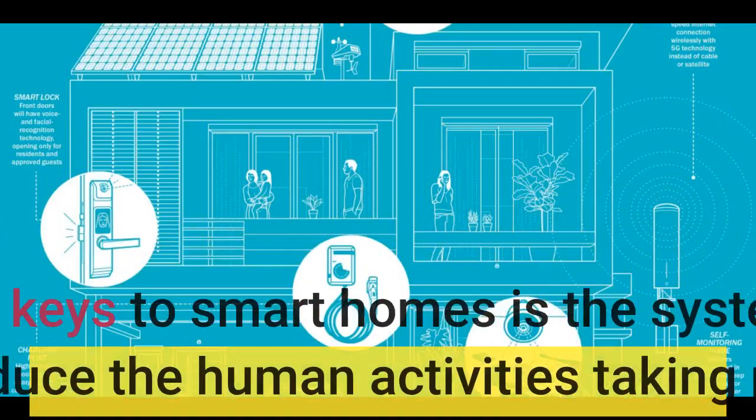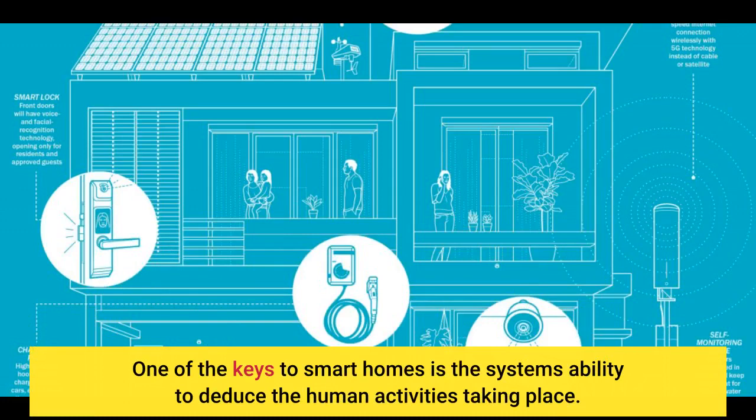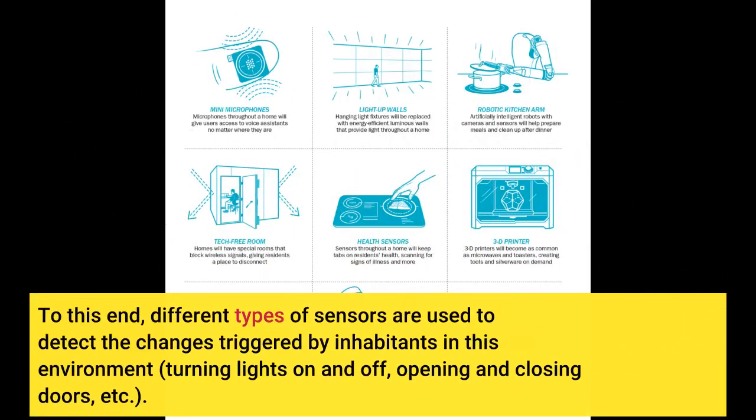One of the keys to smart homes is the system's ability to deduce the human activities taking place. To this end, different types of sensors are used to detect the changes triggered by inhabitants in this environment — turning lights on and off, opening and closing doors, etc.